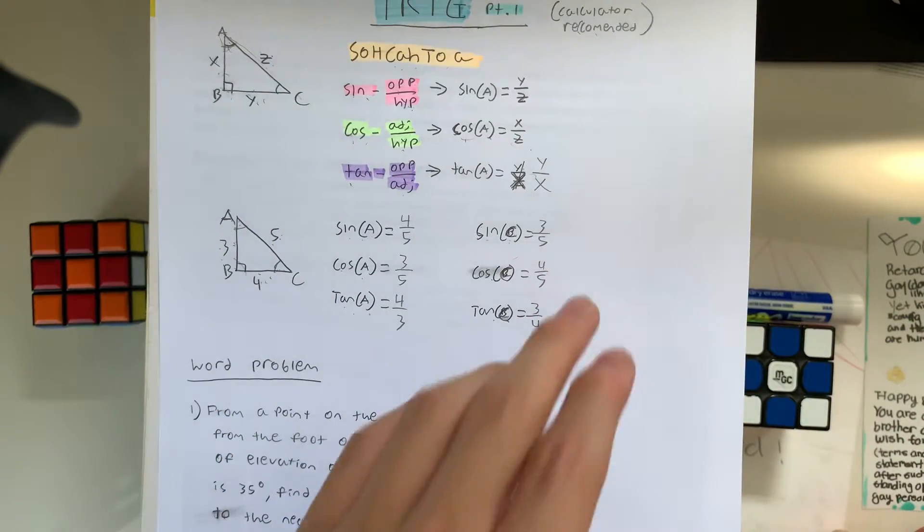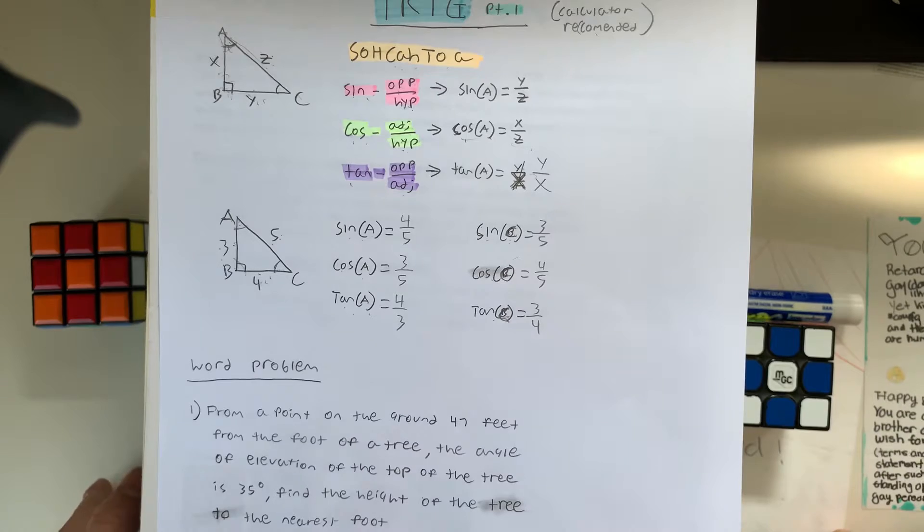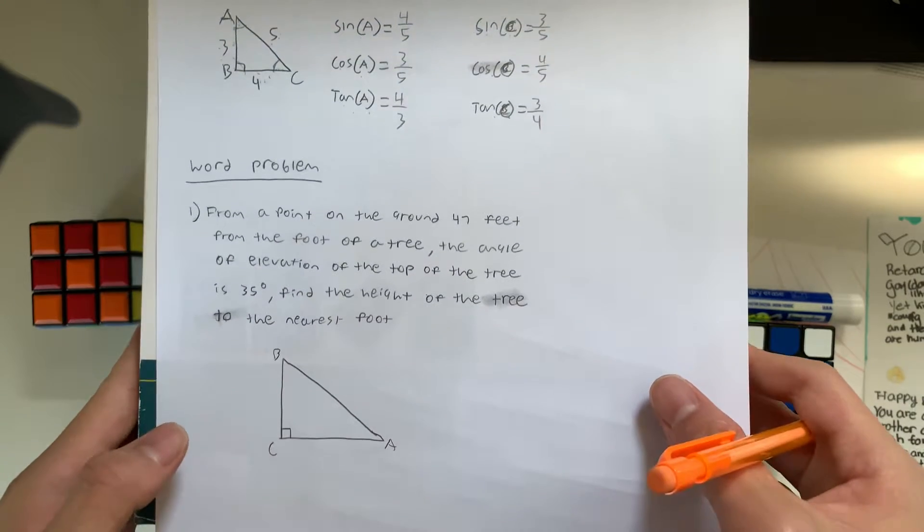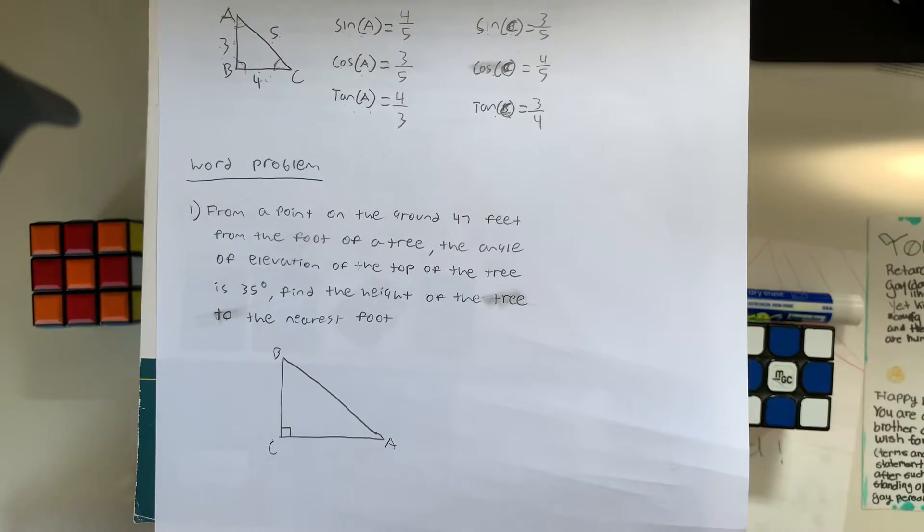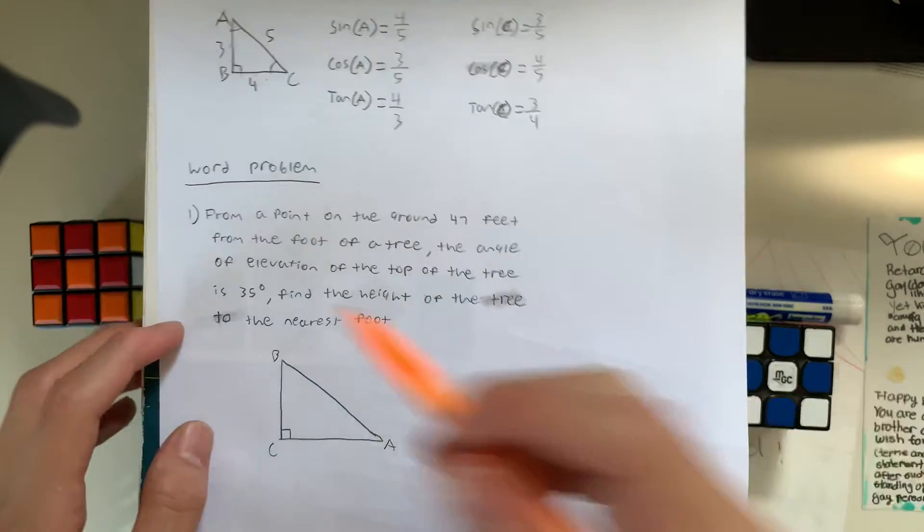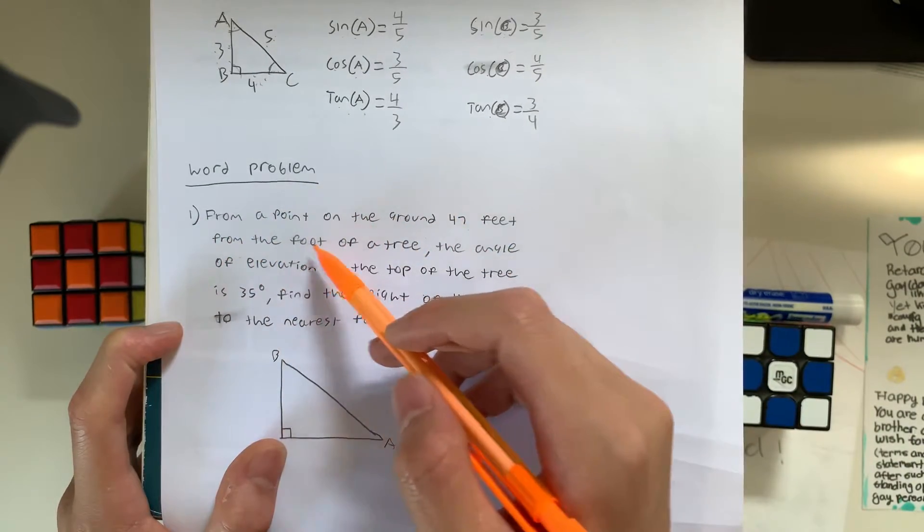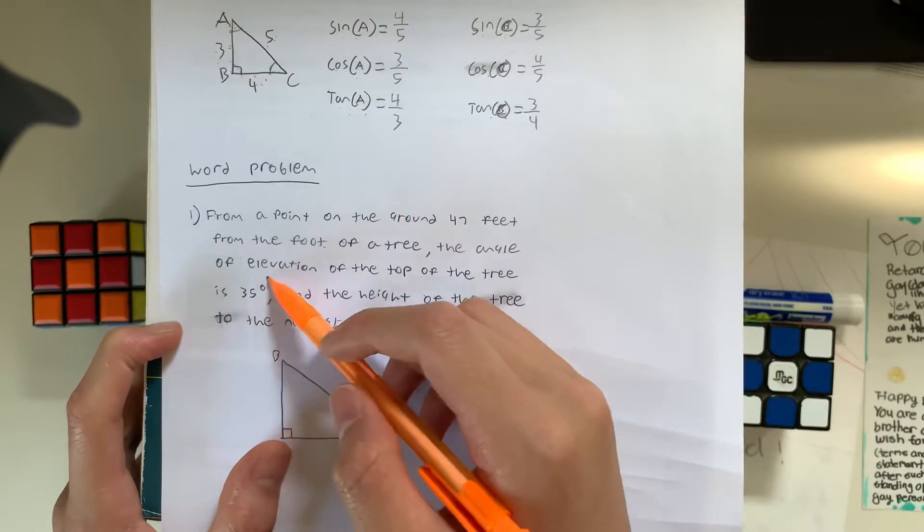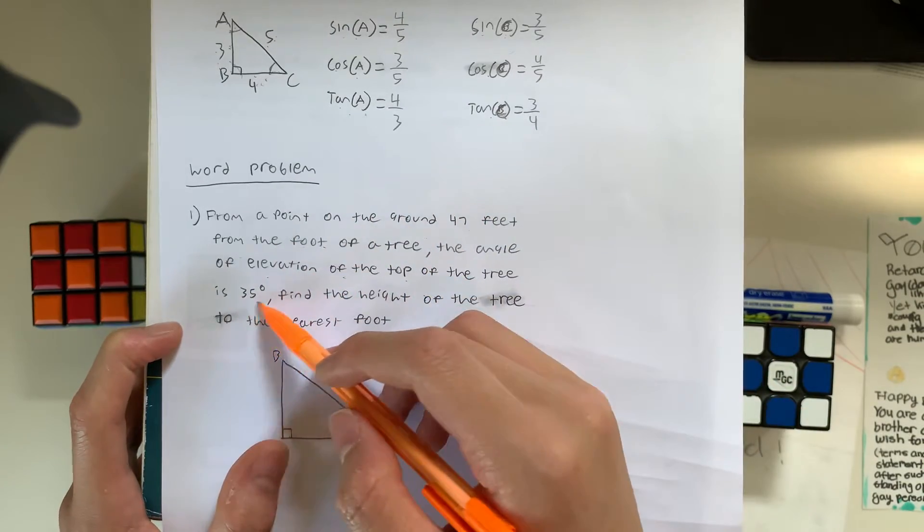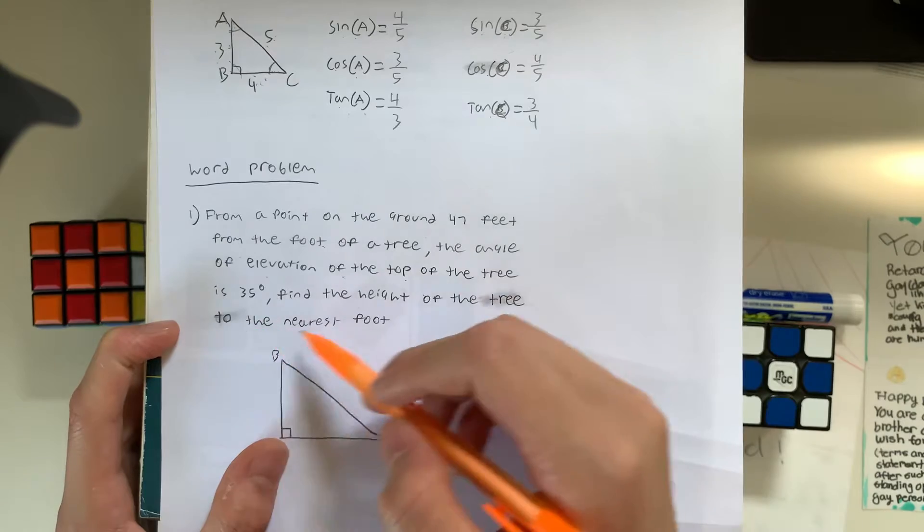And these are the basics of SOHCAHTOA and the foundation of trigonometry. And next, we have a word problem, which is pretty fun to do sometimes. So let me read the word problem. Question 1: From a point on the ground 47 feet from the foot of a tree, the angle of elevation of the top of the tree is 35 degrees. Find the height of the tree to the nearest foot.